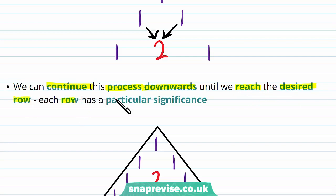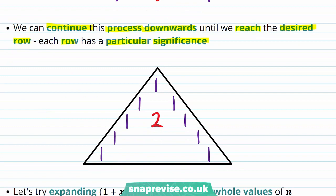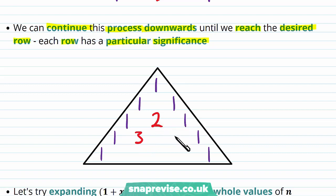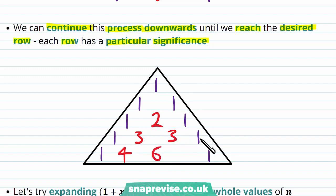Each row has a particular significance. Adding 1 and 2 together gives 3; adding 2 and 1 gives another 3. The 1 and 3 gives a 4, the 3 and 3 gives a 6, and the 3 and 1 gives a 4.